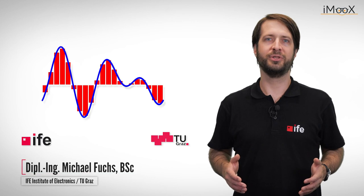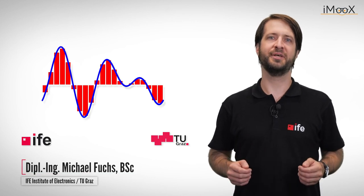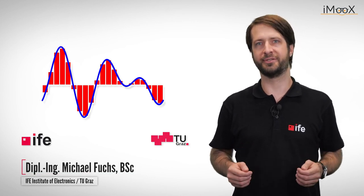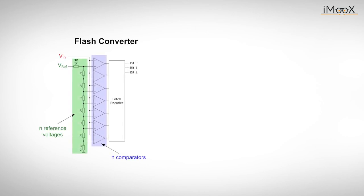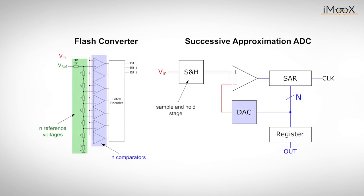In our last video we talked about two basic topologies of analog-to-digital converters, the flash converter and the successive approximation converter, as well as their advantages and disadvantages.